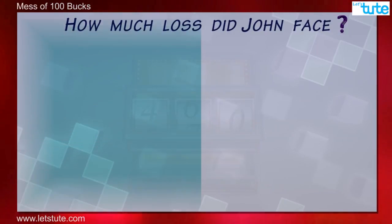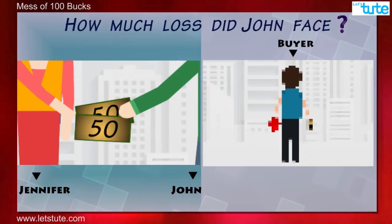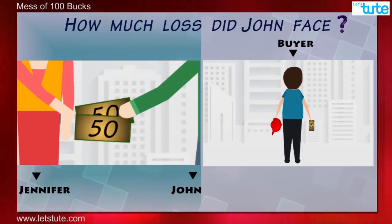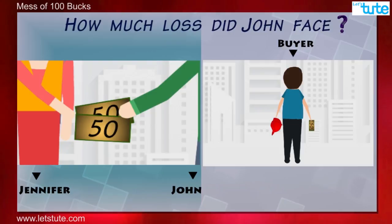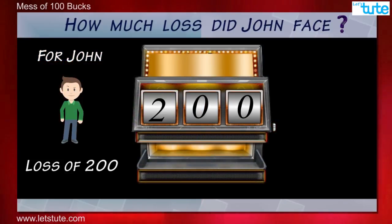Well, if we go to see, John gave 100 bucks to Jennifer. The cap worth 50 which he sold, plus the 50 bucks which the buyer took away. So for John, it's a loss of overall 200, right?